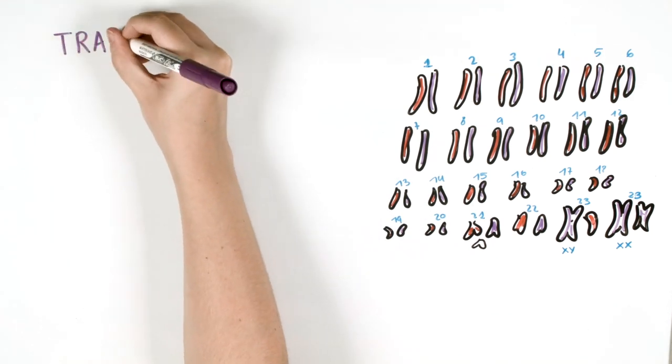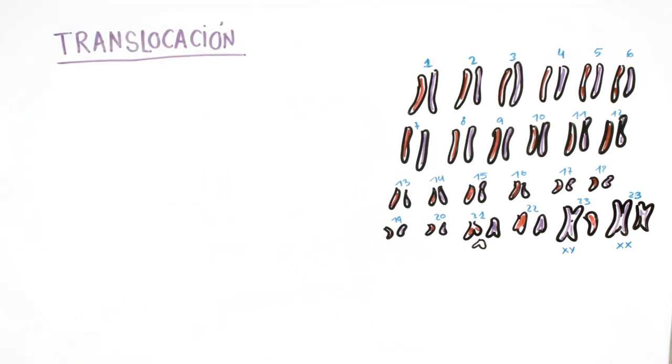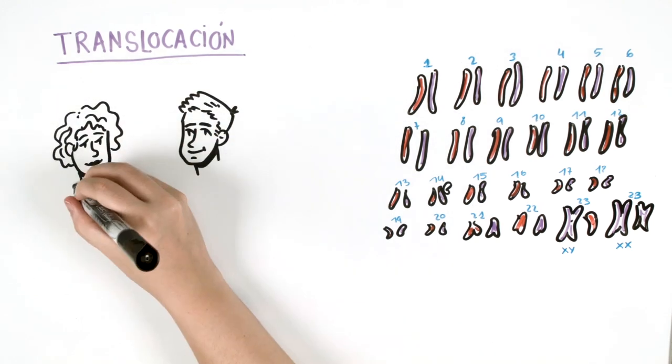There is another variant of trisomy called translocation. In this process, a piece of chromosome 21 from one parent breaks off and sticks to another chromosome, usually the 14. The result is the same, three chromosomes 21.